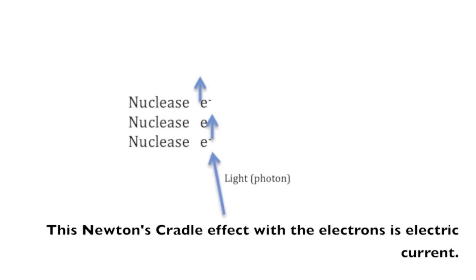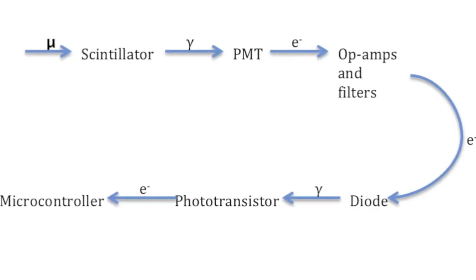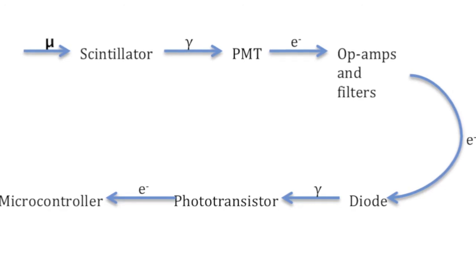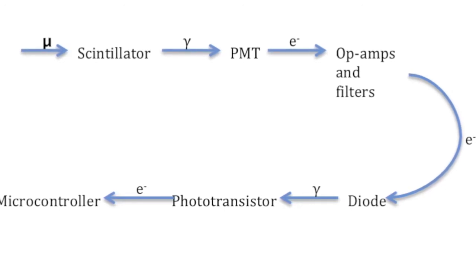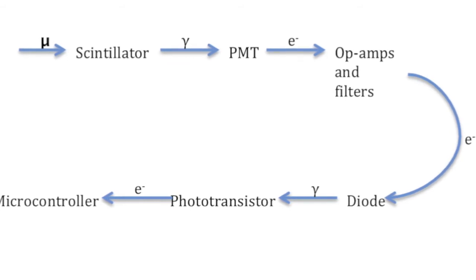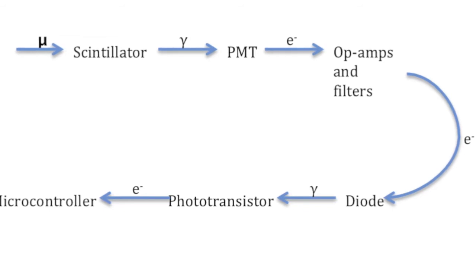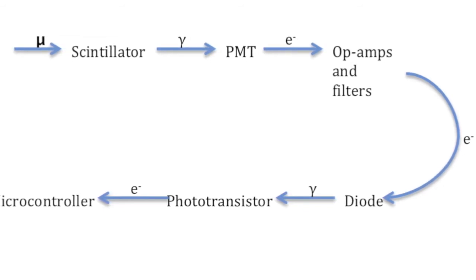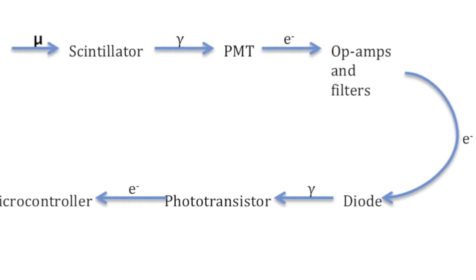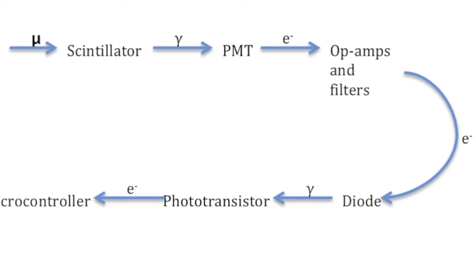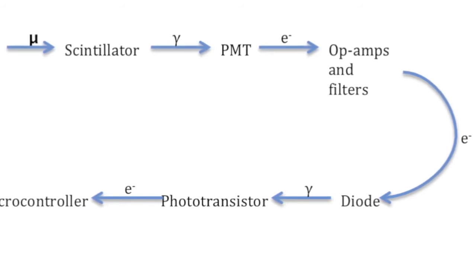What's kind of ironic about this detector is it takes a muon, which is essentially a heavy electron, converts it to light, converts it back to electronics. After it sends it through all of this, the op amps, it actually converts it back to light and then back to electricity. So I'm converting things from leptons to photons and back to leptons and photons and back to leptons. And I just think it's kind of funny how I keep switching it and how in physics that actually works. It's pretty fascinating.